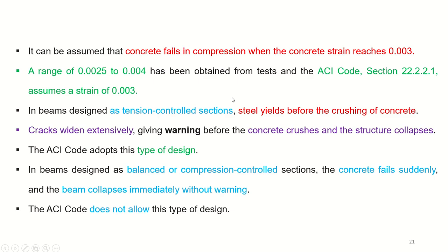We will discuss these in further detail. It can be assumed that concrete fails in compression when the concrete strain reaches 0.003. A range of 0.0025 to 0.004 has been obtained from tests for concrete strain. Therefore, ACI 22.2.2.1 assumes that a strain of 0.003 is the maximum strain at which concrete fails.